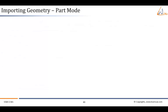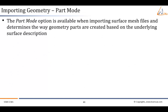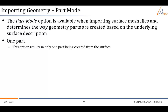Now let us see the part mode import option. The part mode option is available when importing surface mesh files and determines the way geometry parts are created based on the underlying surface description. The option is displayed when importing surfaces as parts, applicable to a single STL file (.STL extension), a database file (.DBS extension), or a JT Open file (.JT extension), and also when two or more surface mesh files are selected. Three different options are provided: 'one part' results in only one part being created from the surface file, applicable when a single STL, database, or JT Open file has been selected.